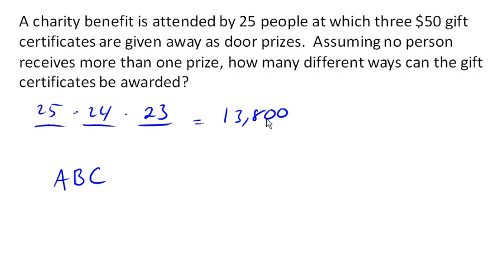But if B was picked first, then A, then C, then this would also be one of those 13,800 possibilities. But really, these are the same outcome.